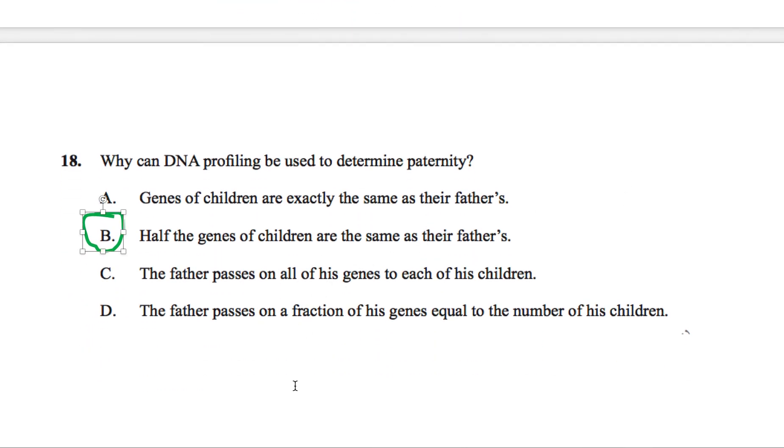How about C, the father passes on all of his genes to each of his children. This is incorrect, your father does not pass on all of his genes, he only passes on half because imagine if he passed on all of his genes and your mother also did that, you would have double the amount of DNA as a normal person and so you would technically not be human. That's why C is not correct.